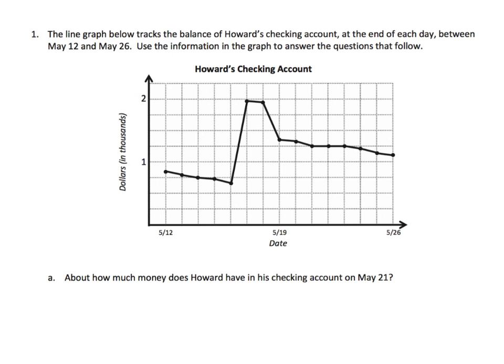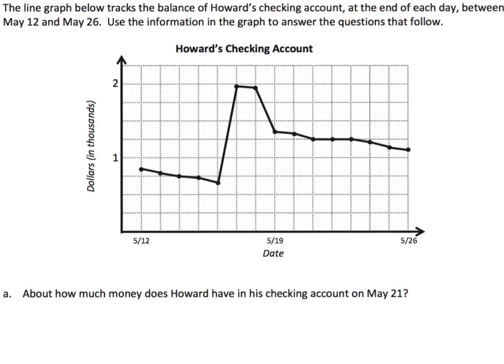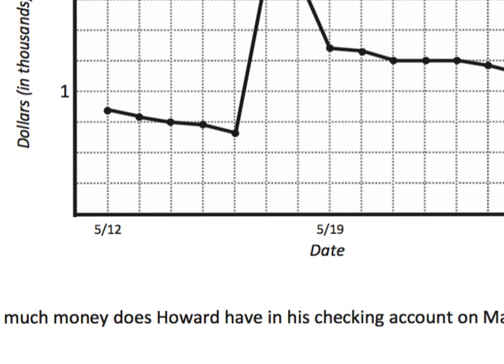So when we're looking at a line plot, some things we want to do: look for a title, it gives us an idea of what this line plot is going to be about. Then I want to look at the labels on the axes. This lower axis, the x-axis, appears to be dates - 5/12, 5/19, 5/26. So I'm guessing each interval is one day.